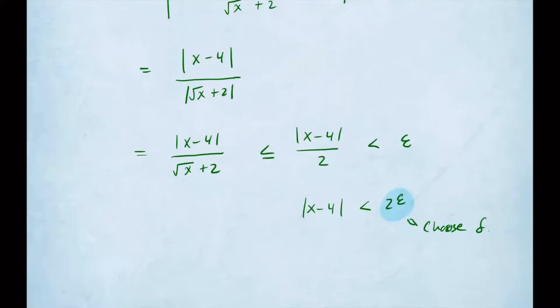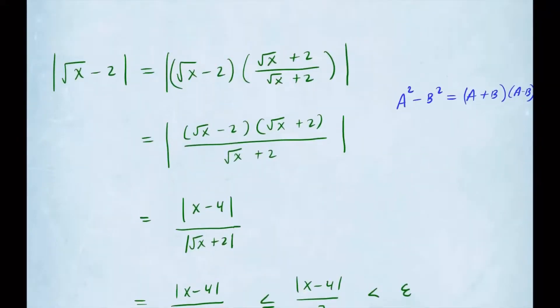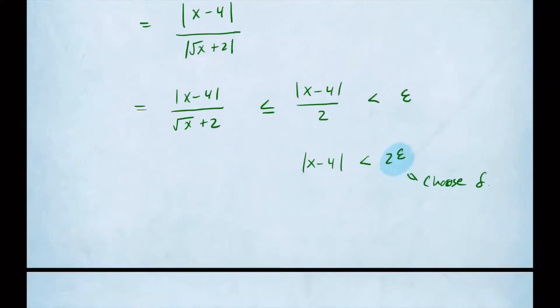Now we can construct the proof going backward, just backtracking all of these steps. So here's how the formal proof is going to go. Let epsilon greater than 0 be given. We're going to choose delta to be 2 times epsilon. Then if the absolute value of x minus 4 is less than delta and x is not 4, because otherwise it wouldn't make sense.